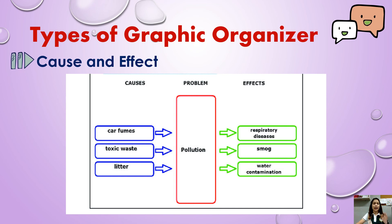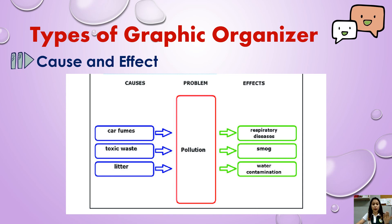The last type is cause and effect, which helps in identifying the causes and effects of an event. This is also known as a multi-flow map. We have causes, a central problem, and effects. It represents the main event in the central section of the map, then branches into causes and effects. For example, the problem is pollution. The causes are: car fumes, toxic waste, and litter. The effects are: respiratory diseases, smog, and water contamination.